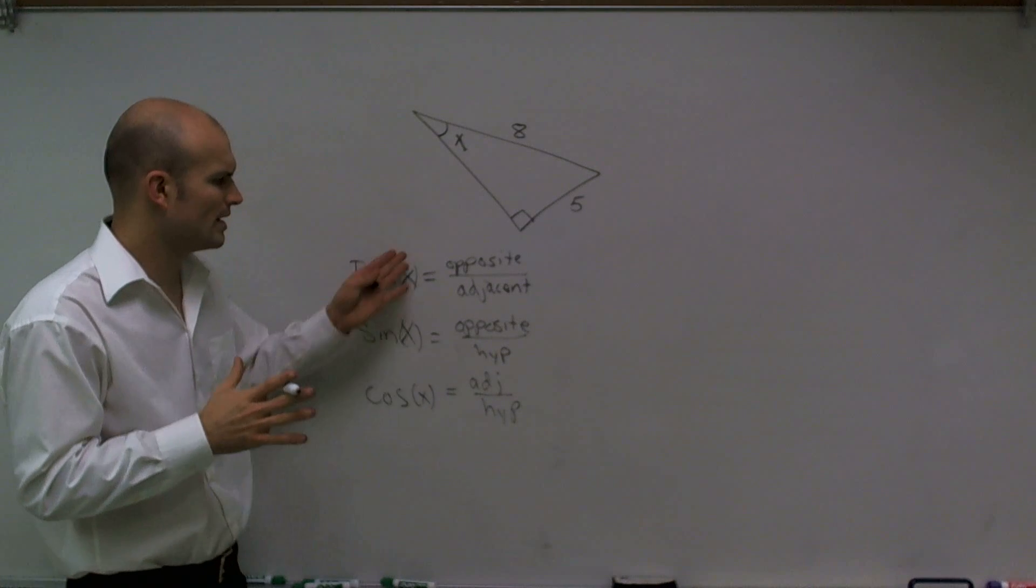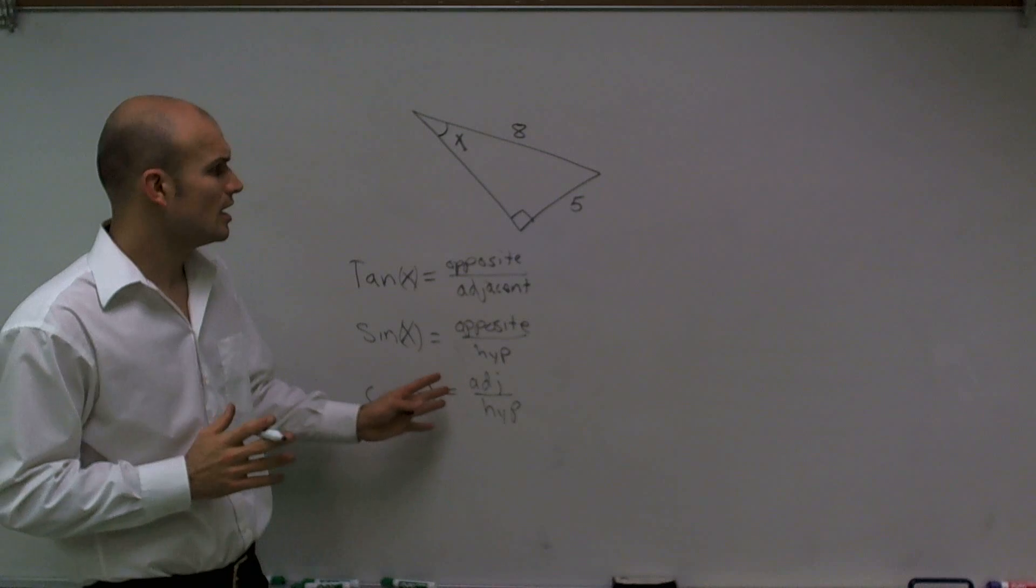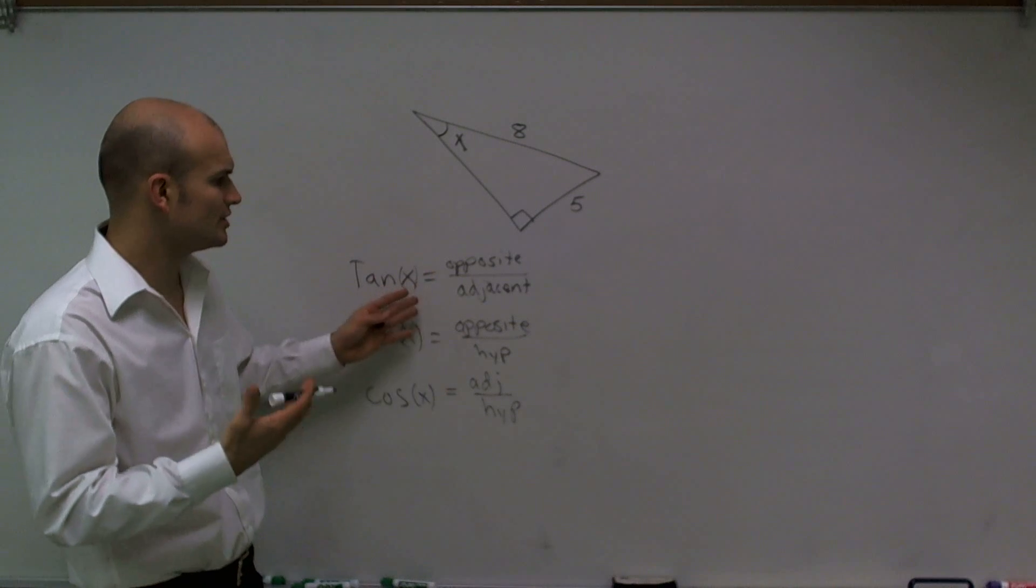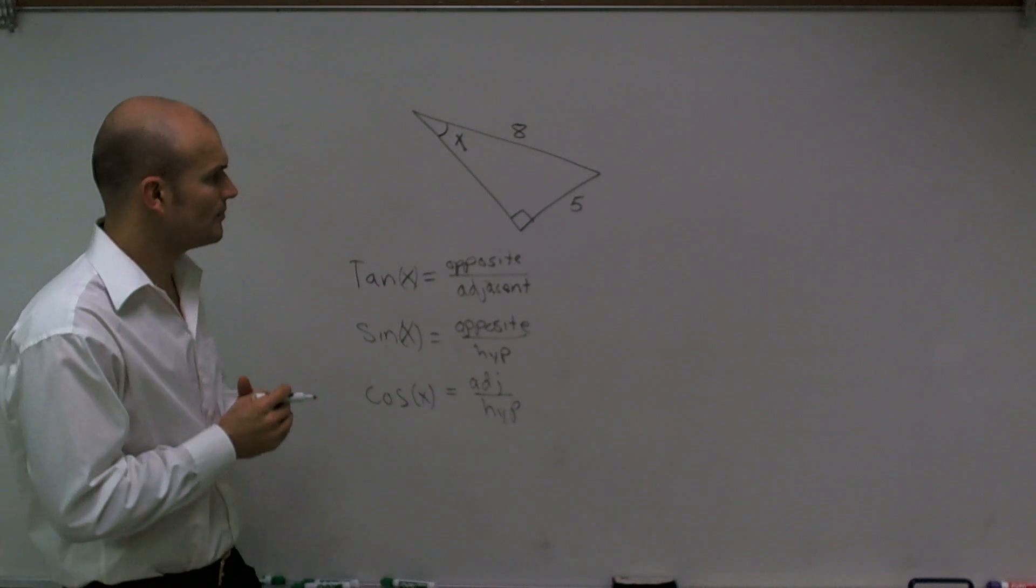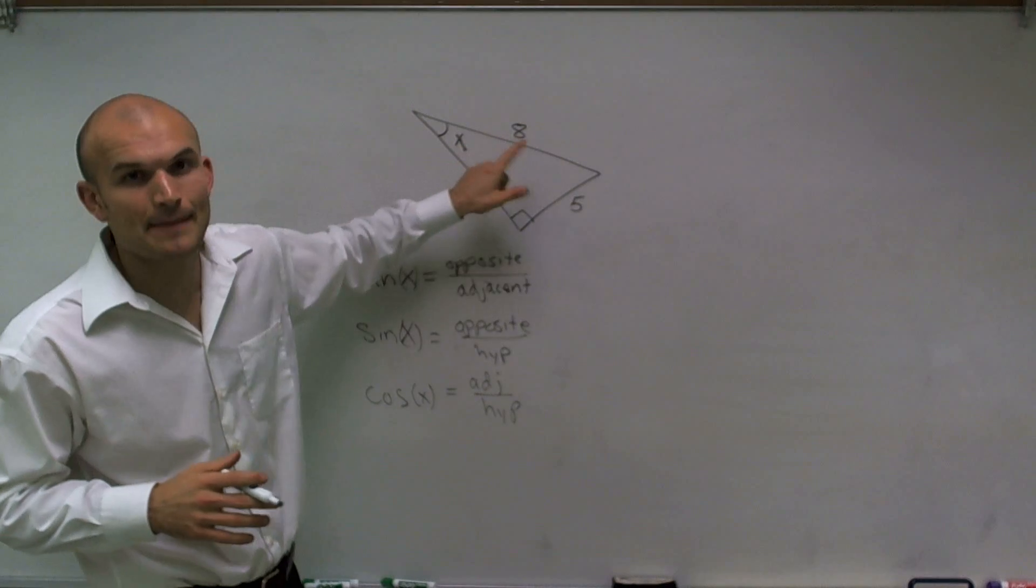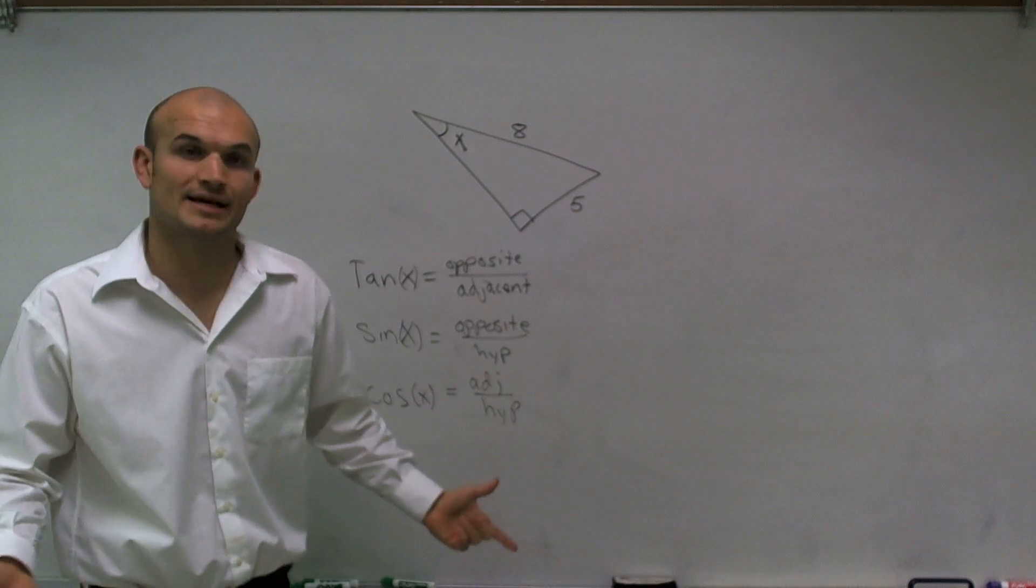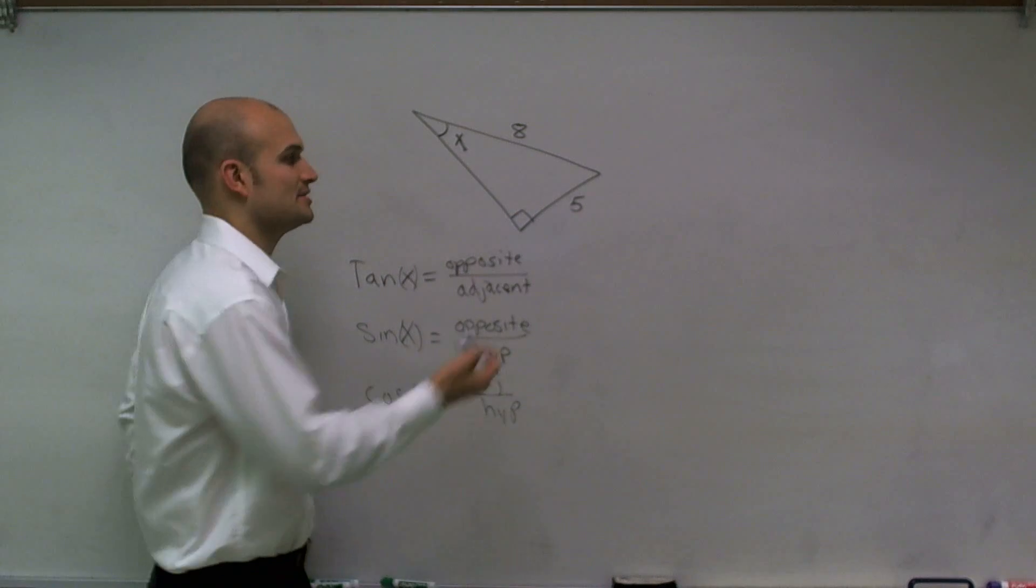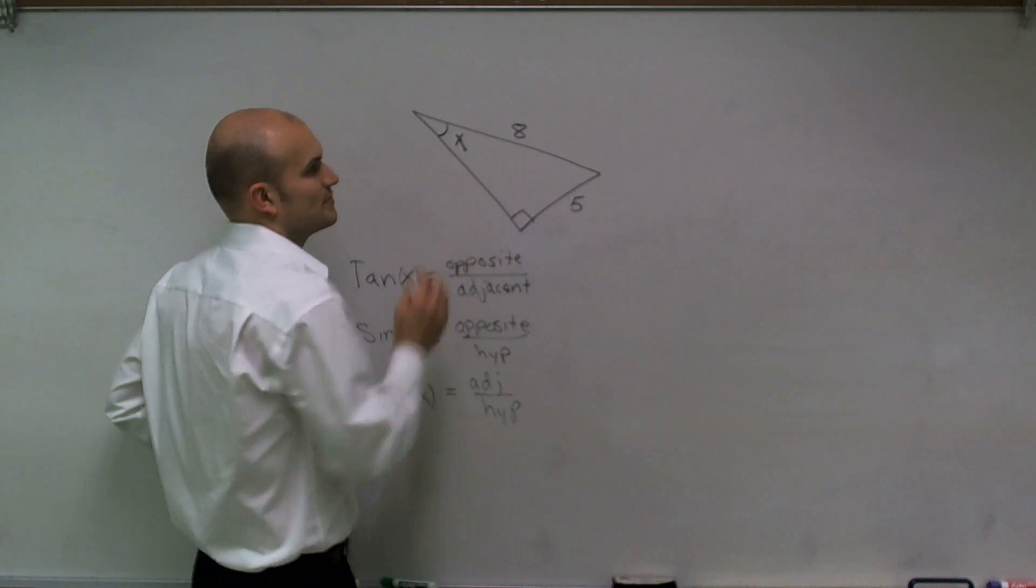Now, you might ask me, I kind of remember hypotenuse from doing the Pythagorean theorem, but where did your adjacent or your opposite come from? Well, if I'm going to look at my angle x right here, we know that the hypotenuse is always going to be the longest length. Well, another way to remember that is your hypotenuse is always directly across from your 90-degree angle.